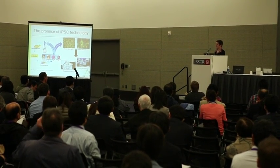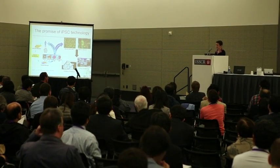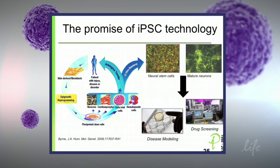The power of IPS technology in modeling Parkinson's disease in a dish allows us to take skin from a patient with the disease, do the reprogramming to get into a pluripotent state, and then differentiate the cells into a tissue type of interest — in our case, neurons, neural stem cells, and mature neurons. Once we have this model in a dish, we can use it for disease modeling, looking for disease mechanisms and phenotypes, and ultimately this lays the foundation for drug screening.